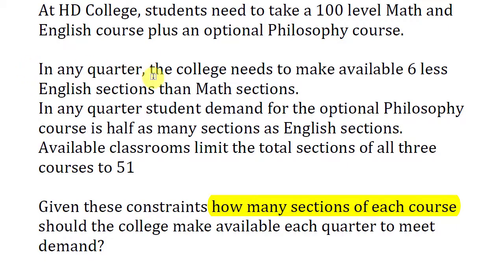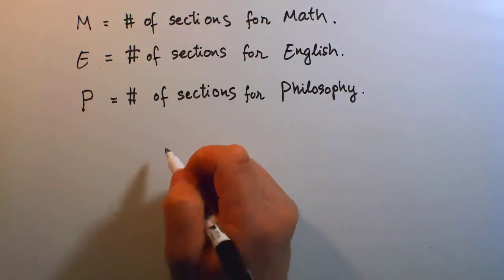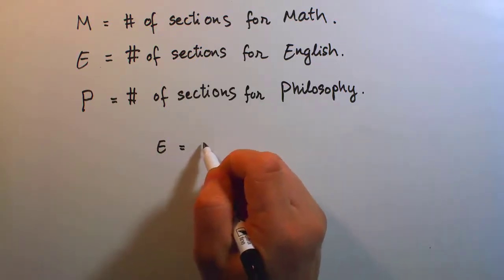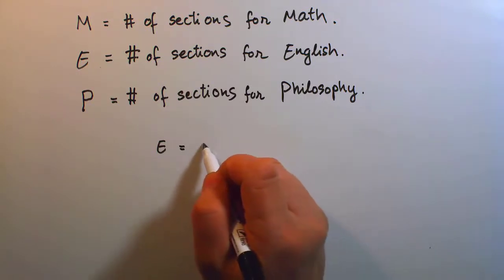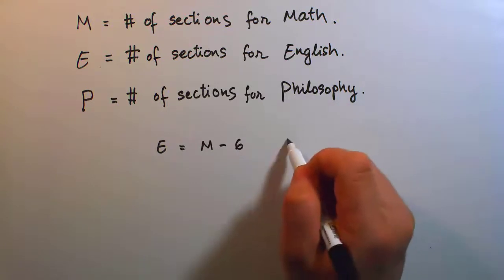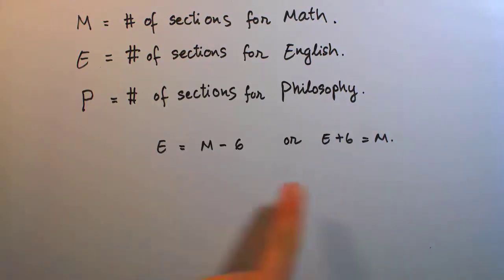The first thing indicated to us: in any quarter, the college needs to make available six less English sections than math sections. Extracting that piece of information, this is a relationship between M and E. The number of English sections is less than math sections by six. So E equals M minus six, or equivalently, E plus six equals M. These two are the same relationship.